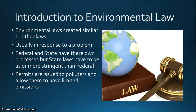Similar to most laws, environmental laws were created to address a problem. One of the first recognized environmental laws is the Rivers and Harbors Act of 1899. The law was created to regulate the dumping of items that might interfere with navigation of waterways, as well as requiring the approval of the U.S. Congress to construct harbors, wharves, bridges, dams, and dikes over or in navigable waterways. It did not address discharges of human waste or industrial effluent into water, but it did provide a foundation for modern environmental requirements.